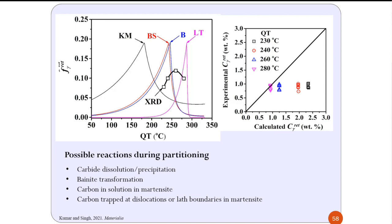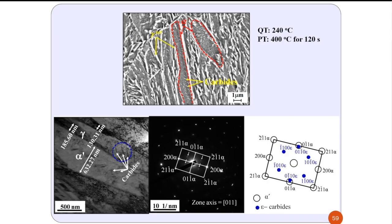There was some amount of carbide precipitation in the as-quenched sample itself. These carbides — possibly epsilon carbides or other metastable carbides — may undergo dissolution during partitioning at higher temperature. This is not accounted for in the model. Additionally, bainite transformation can occur during the partitioning treatment. The model assumes martensite completely decarburizes, but martensite can continue to hold a certain amount of carbon, especially at dislocations and other defects. These simplifications result in poor fit between experimental data and calculated ones.